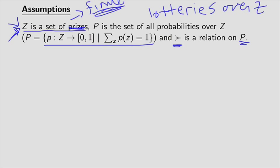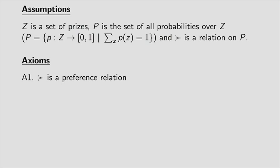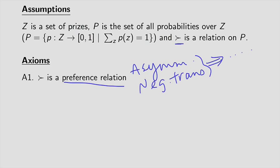Now there's three axioms we're going to assume. First of all, we want to assume that this relation on P is in fact a preference relation. So what does that mean? Well, that means it's going to be asymmetric and negatively transitive. And this implies lots and lots of things about how this preference relation behaves. So we've talked about this in class already. It might be a good idea to remind yourself what exactly it means to be a preference relation. So we're assuming that the agent has this preference relation over the set of all lotteries. So that's our first axiom.